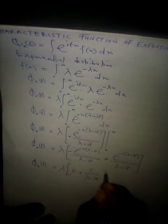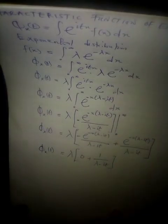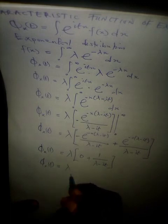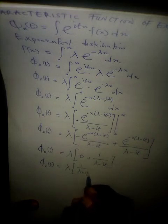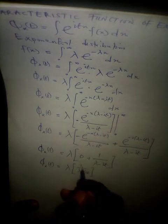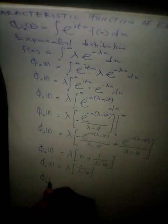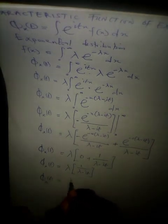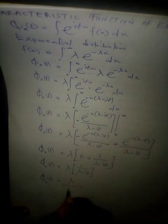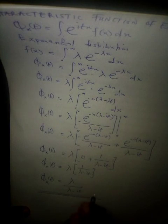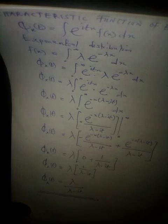Therefore, phi of x of t equals lambda times the bracket one over lambda minus i theta t. Multiplying this out, we get phi of x of t equals lambda divided by lambda minus i theta t. This is the characteristic function of an exponential distribution. Thank you for watching.